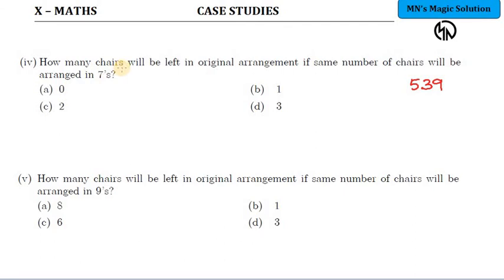Fourth subdivision is exactly similar. How many chairs will be left in original arrangement if same number of chairs will be arranged in 7s? Same number of chairs means the initial 539. When arranging in 7s, you have to divide by 7. So division by 7: 7 times 49, balance 4, again 49. Are there any number of chairs left out? No.